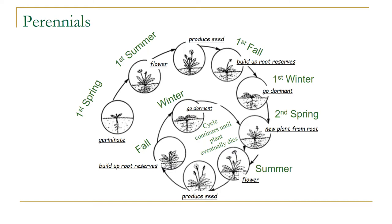Most plants on rangelands — and most we'll study in this class — are perennials. They germinate, grow the first year, and may produce flowers that year or stay vegetative for a year or two. Then they enter a cycle of going dormant each winter, coming out of dormancy in spring, growing, producing seeds, and repeating. An early misconception in range management was that perennial plants may live only a few years, but photography of individual plots has shown that grasses, for example, can live for decades.